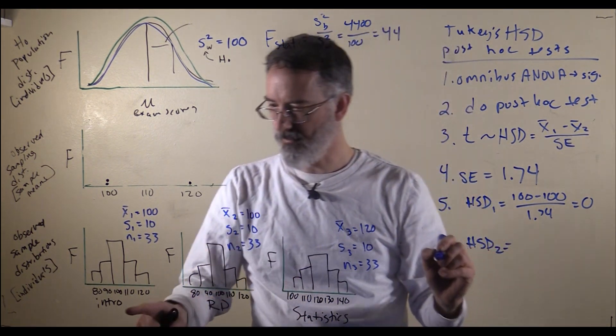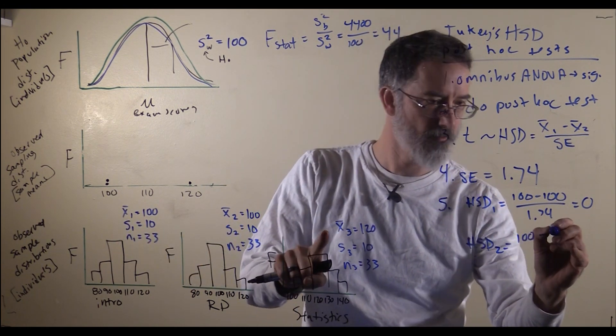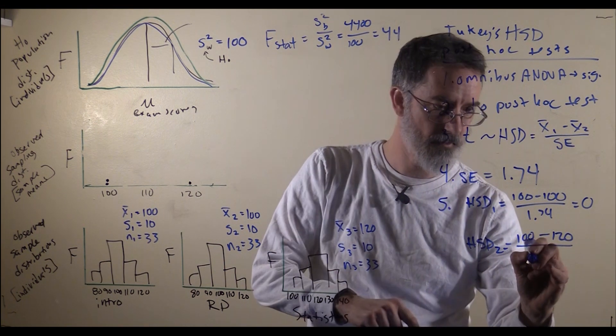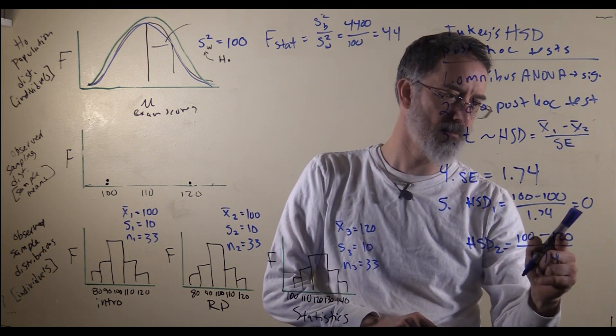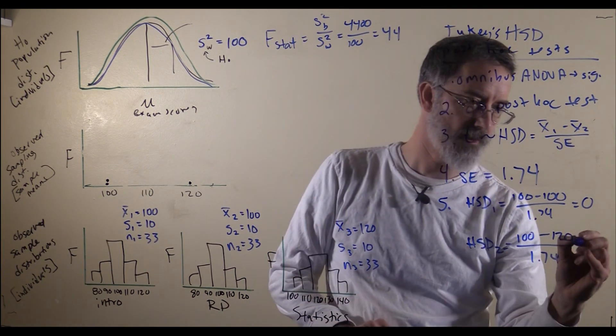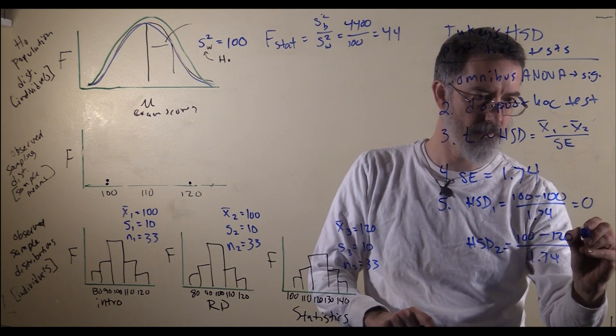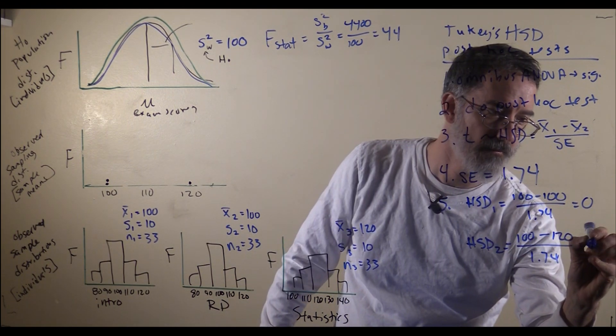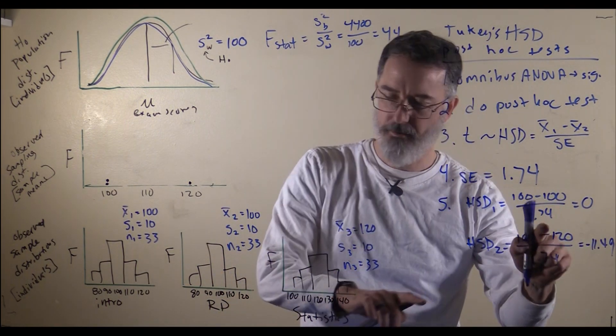We have to do this for all pairwise comparisons. This is our second one. We will go with intro again. It is 100 minus 120 divided by 1.74. I know it is arbitrary if it was 100 minus 120 or 120 minus 100. It is a two-tailed test, so it does not matter which way you do it. Here we get negative 20 divided by 1.74. This equals negative 11.49.